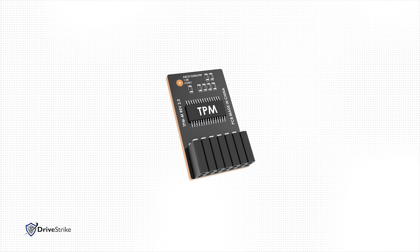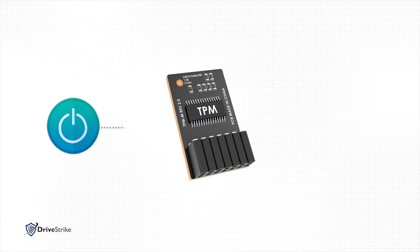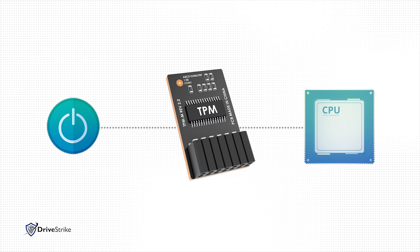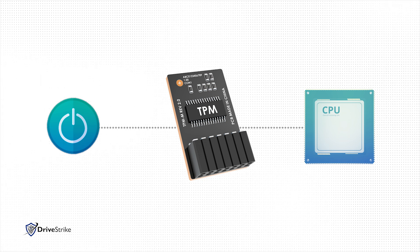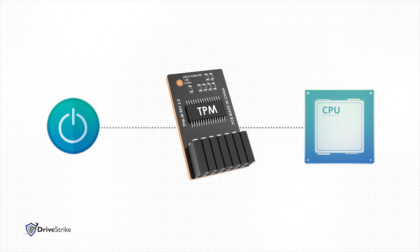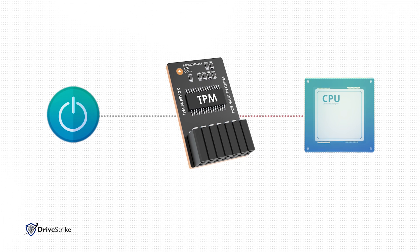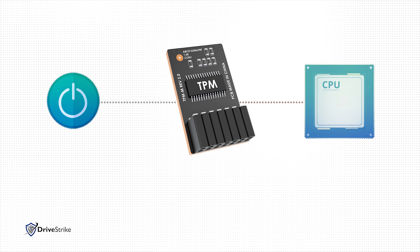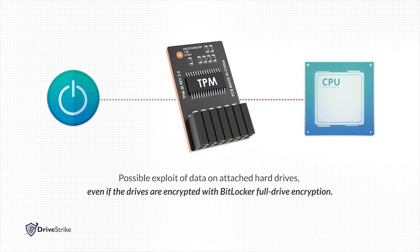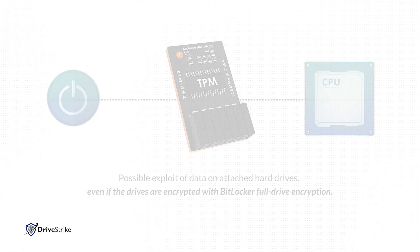Simply stated, the TPM chip sends encryption key values in plain text to the CPU on system boot-up and, if compromised, enables an attacker to exploit data on attached hard drives, even if the drives are encrypted with BitLocker full-drive encryption.